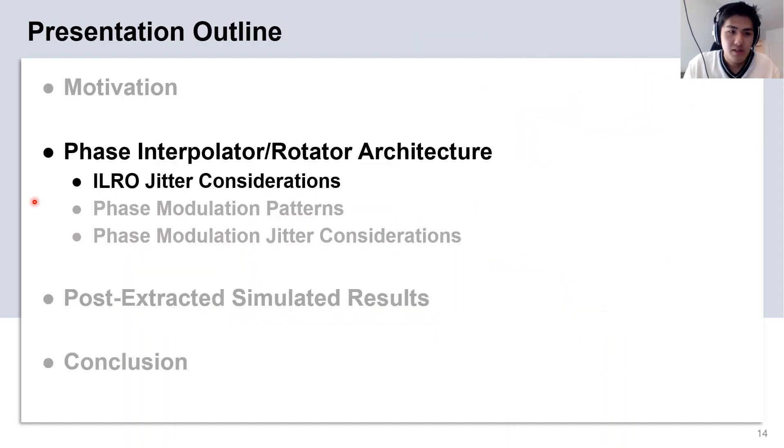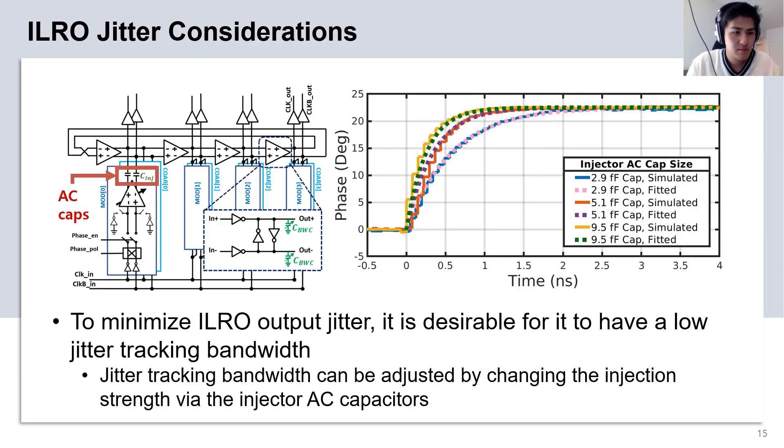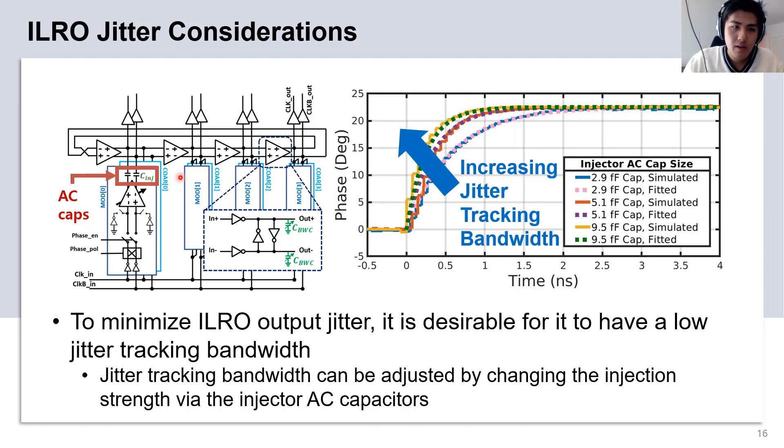So next, I want to discuss the ILO's jitter considerations. Due to the ILO's inherent low-pass jitter transfer characteristics, to minimize jitter, we want to minimize its tracking bandwidth. Here, we adjust the AC coupling capacitor size to vary the ILO's injection strength, which by increasing its capacitance, proportionally increases the ILO's jitter tracking bandwidth.